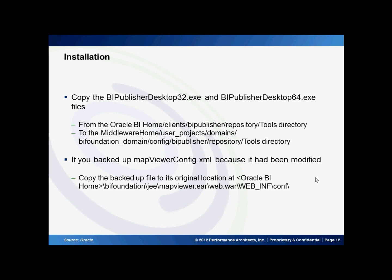After this is done, you're going to want to copy the BI Publisher Desktop 32 and 64 EXE files as indicated below. This is due to the fact that they are placed in the wrong location, and if a user intended on downloading the tools from the UI, it wouldn't work. If you backed up the map viewer in a previous step, you'll also need to go and actually restore that file.